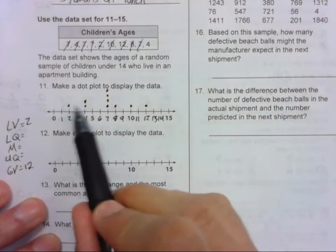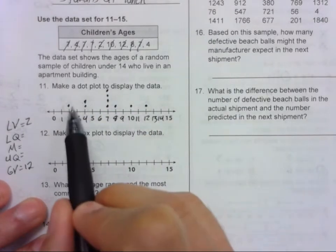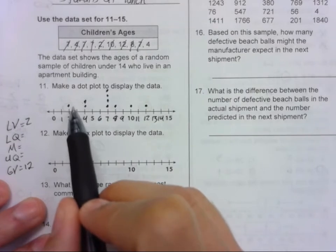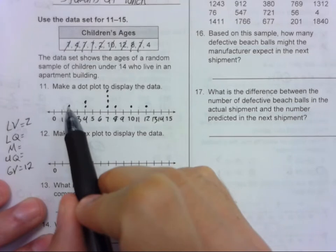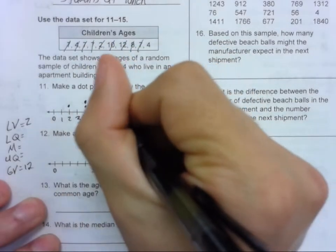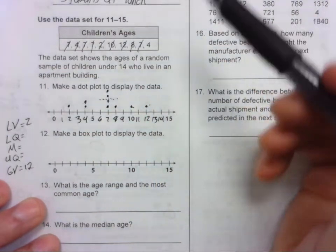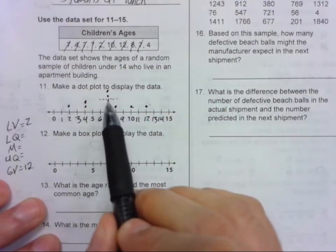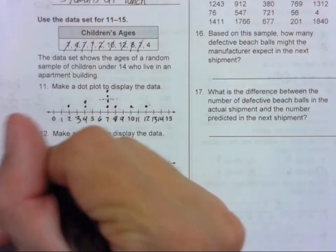Counting 1, 2, 3, 4, 5, 6, 7, 8, 9, 10. Okay, so our median is between the 5th and 6th points. 1, 2, 3, 4, 5, 6, 7, 8, 9, 10. So our median is between these two. Fortunately, they're both 7. So what number is between 7 and 7? 7.